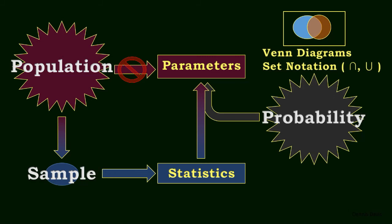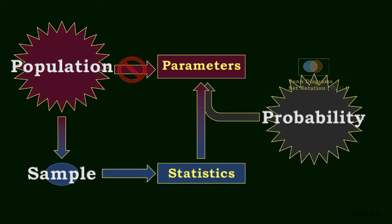Venn diagrams and set notation, including intersection and union, are essential probability concepts, as is conditional probability and Bayes theorem.